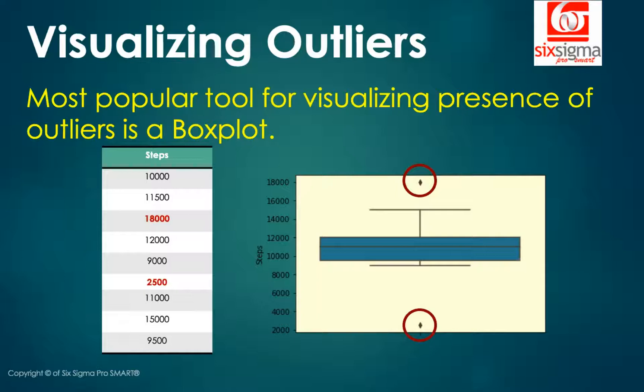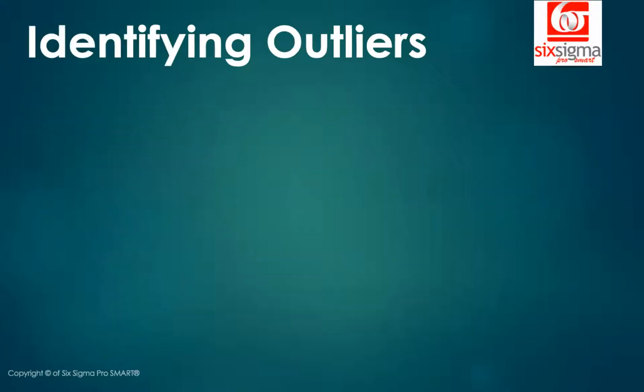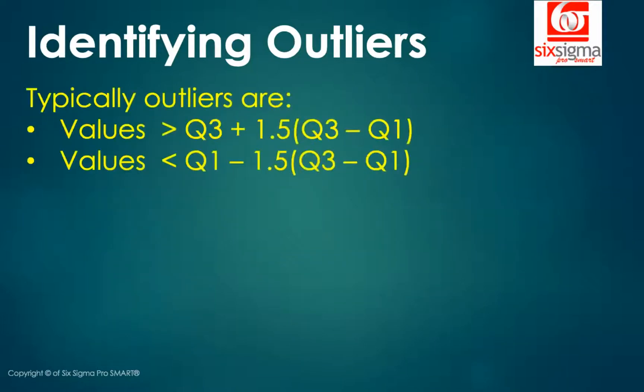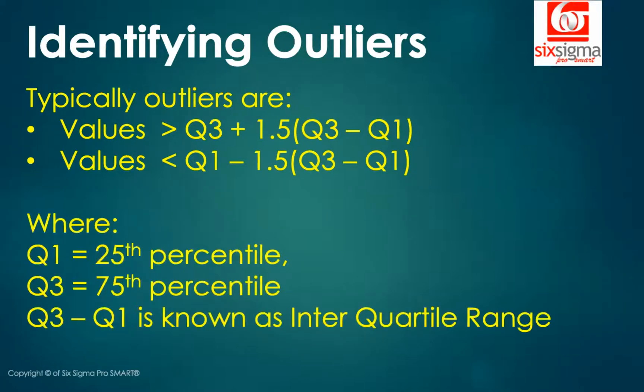But that still leaves a question. How do we decide that a given value is outlier? For example, in this case, why 15,000 is not an outlier? Why 18,000 is an outlier? So, of course, there has to be some kind of boundary beyond which the values are called outliers. And how do we identify these boundaries? Typically, if a given value is greater than Q3 plus 1.5 times Q3 minus Q1, or if a given value is less than Q1 minus 1.5 times Q3 minus Q1. Now, what are these Q3s, Q1s? And what is this Q3 minus Q1? We've done this in one of our earlier videos. But just to quickly refresh in your mind, Q1 is the 25th percentile. Q3 is the 75th percentile. And Q3 minus Q1 is known as the interquartile range. So it's the middle 50% of the data.